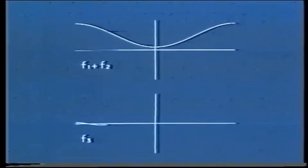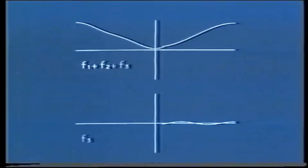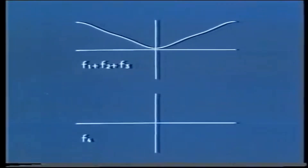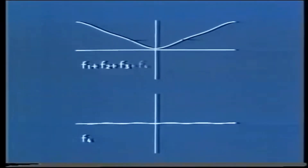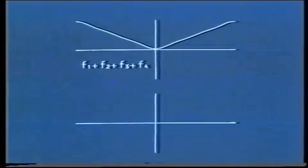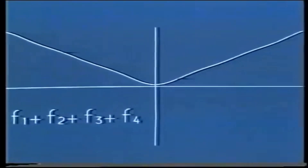And here's another function. And we can also add that. And here's another. This one's a very shallow curve, so it won't make that much difference when you add it in. But if you look closely, you'll see that what happens is that it just smooths out the ripples. So now we've got a function that looks rather different from any of the functions that we started with.